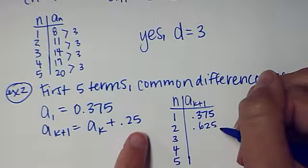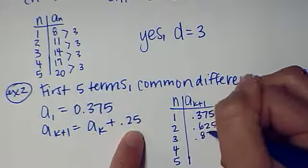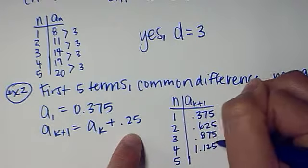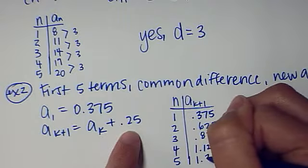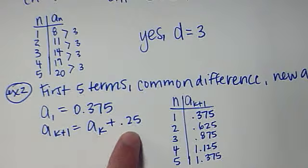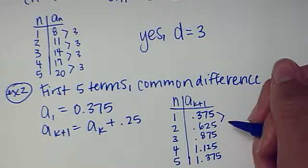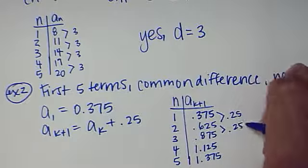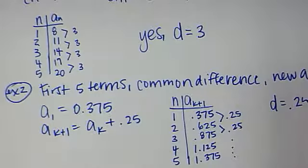So then I have 0.625 plus 0.25, which is 0.875. And then I have 0.875 plus 0.25, which is 1.125. And then I have 1.125 plus 0.25, which is 1.375. So, is there a common difference? The common difference is 0.25, and you know that goes on and on because that's what we added each time, so that's our D, 0.25.